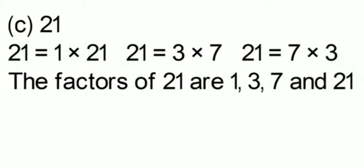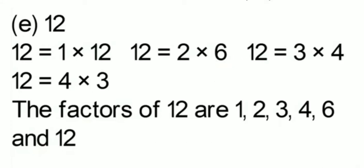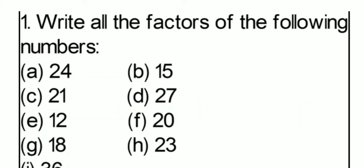Next, number E is 12. Factors of 12: it is divisible by 1 — 1 into 12 is equal to 12; by 2 — so 2 into 6 is equal to 12; by 3 — so 3 into 4 is equal to 12; by 4 — 4 into 3 is equal to 12, but that's already written. So the factors of 12 are 1, 2, 3, 4, 6 and 12. The rest, try to do yourself.